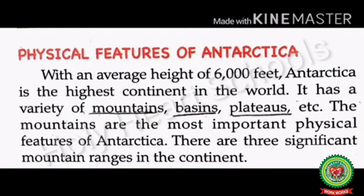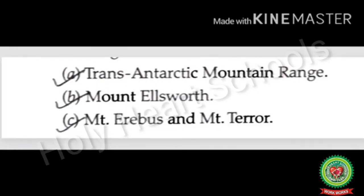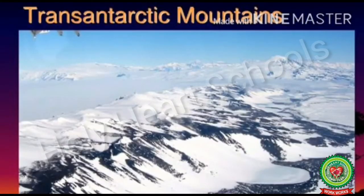The Antarctica has a variety of mountains, basins, and plateaus. Mountains are the most important physical features of Antarctica. There are three significant mountain ranges in the continent: number one, the Trans-Antarctic Mountain Range; number two, Mount Ellsworth; and number three, Mount Erebus and Mount Terror.